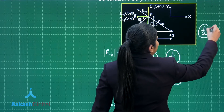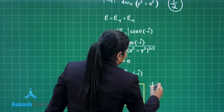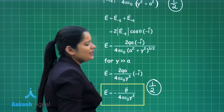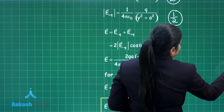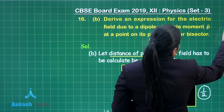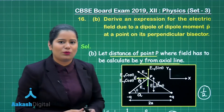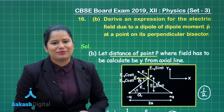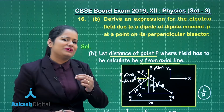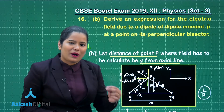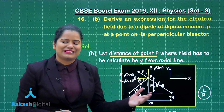The final half mark is awarded for the final expression. This is how you score two out of two marks for this part and three out of three marks for question number 16. Let's now move on to the discussion for the next question.